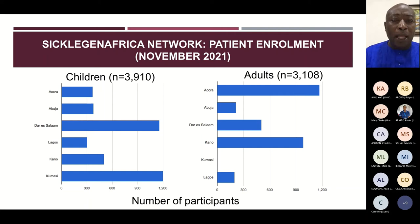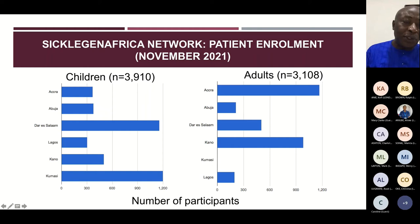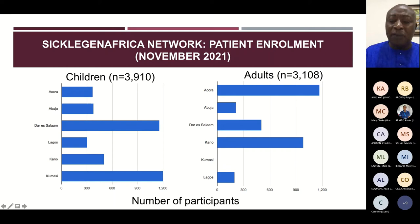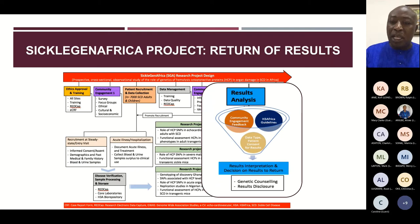We've actually reached our target of 7,000 patients enrolled. As of this month: 3,910 children and 3,108 adults, enrolled across the cities of Accra, Abuja, Kano, Kumasi for children, and Accra for adults — Accra having the largest number. Collectively this is 7,000 patients enrolled in a sickle cell project — by far the largest such study in the world. The next largest study is the Cooperative Study of Sickle Cell Disease, which enrolled approximately 3,500. So we have hit the mark in terms of patient numbers.